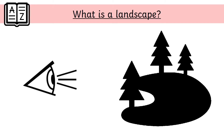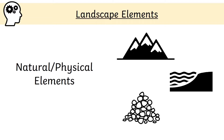Landscapes are made from a combination of landscape features called elements. These elements can be put into four groups. The first group are natural or physical elements. Natural or physical elements include landforms such as mountains, coastlines and valleys; water such as rivers, lakes and the ocean; soils; different types of geology which are different types of rock; and climate which is the average pattern of weather.